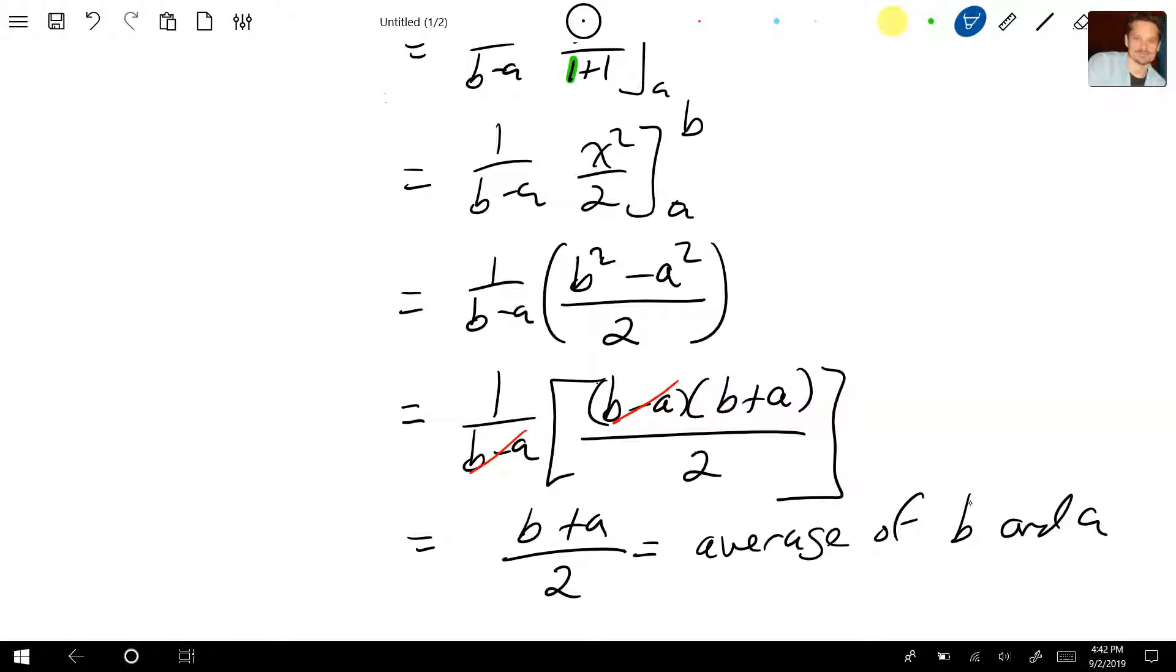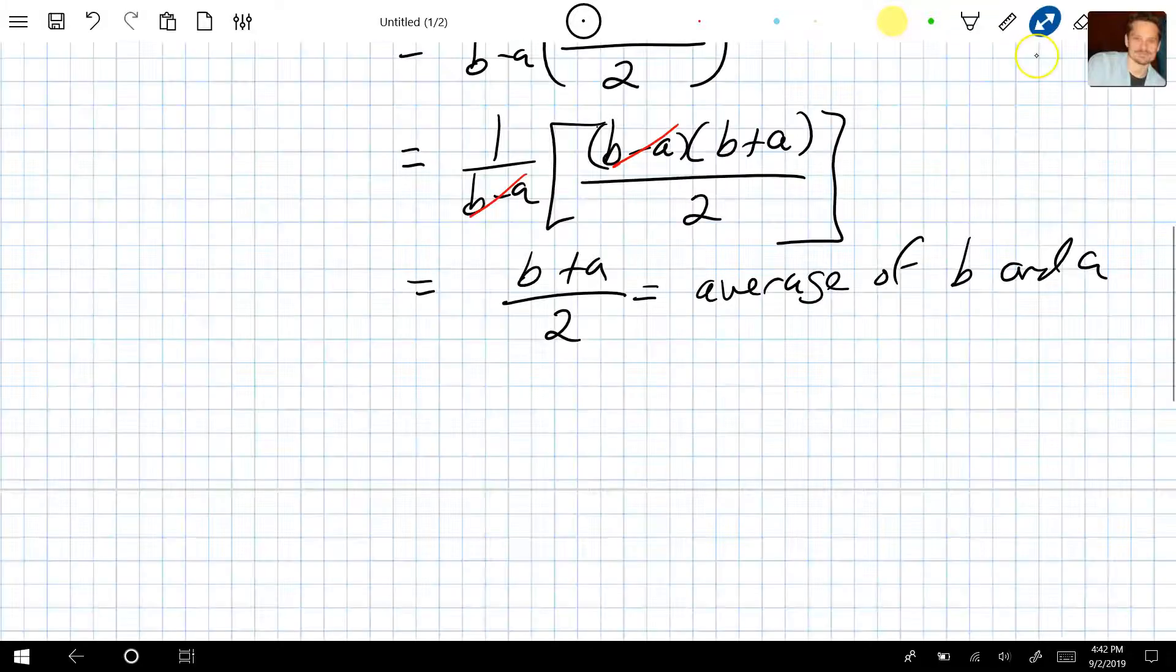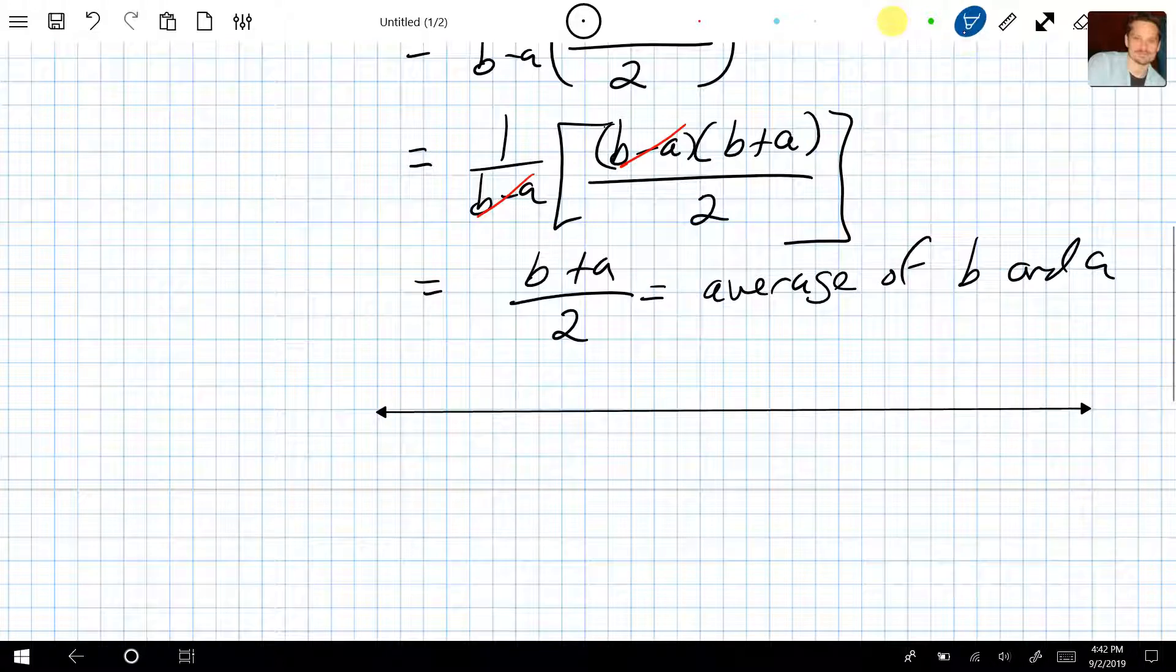So if you were to represent this on a number line, it would look like this. This is going to be my x-axis, say that it goes over this way. And then say over here that this is a, and then say this is b. Then b plus a over 2 is nothing but literally the value in the middle.